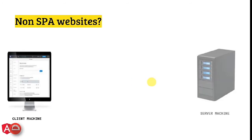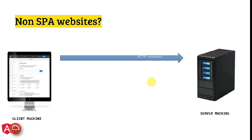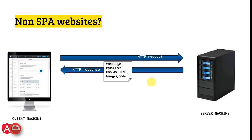Let's look at this diagram for the non-SPA website. There are two machines: one is the client machine and the second is the server machine. Whenever the client sends a request, the server sends a response in which it sends all the resources and the code — HTTP request, HTTP response with the web page resources like CSS, JavaScript, HTML, images and other code. Again if the user performs certain actions and submits the web page by sending an HTTP request, the server again sends the full page and full resources, which is time-taking and utilizes more resources.